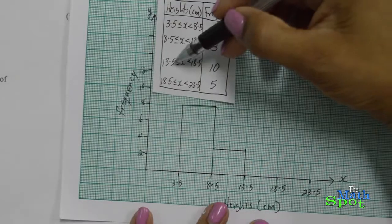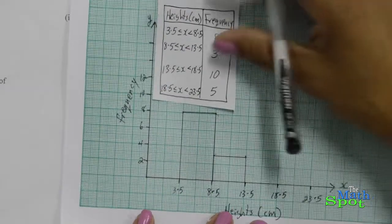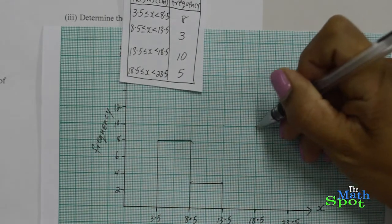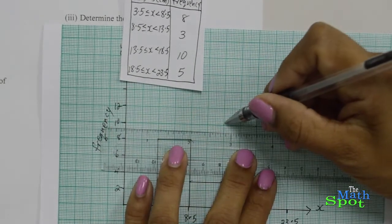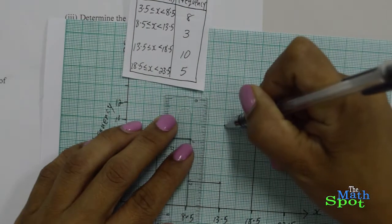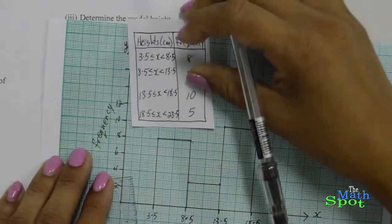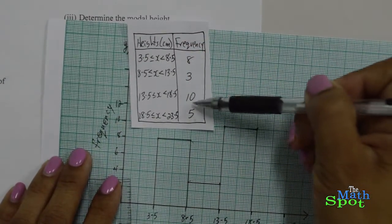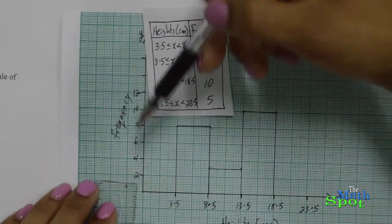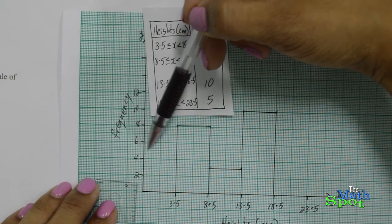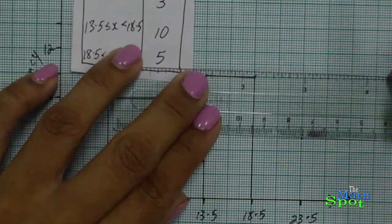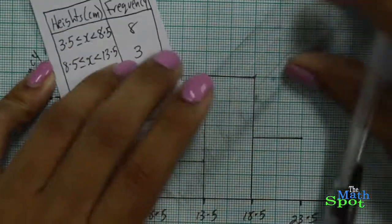For our third bar, from 13.5 to 18.5, that one has a frequency of 10. Locate frequency 10 — we know how high that bar is going to be, and we construct it. And for our final bar, 18.5 to 23.5, that one has a frequency of 5. Locating 5 on the y-axis, we know its height, and this gives us our final bar for our histogram.